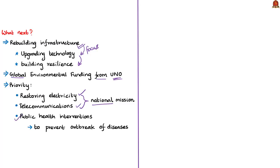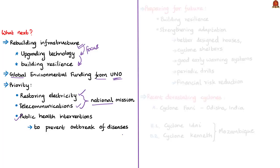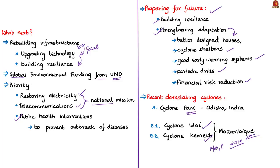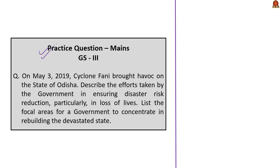Regarding preparing for the future, the author states that preparedness should focus on building resilience and strengthening adaptation through better designed houses and cyclone shelters, good early warning systems as the key to better management, periodic drills, and financial risk reduction through insurance. The author concludes that the management of Cyclone Fani in Odisha, along with devastating cyclones Idai and Kenneth which affected Mozambique in March and April 2019, will be leading discussion points at the upcoming UN Disaster Risk Reduction Conference in Geneva on May 13, 2019.